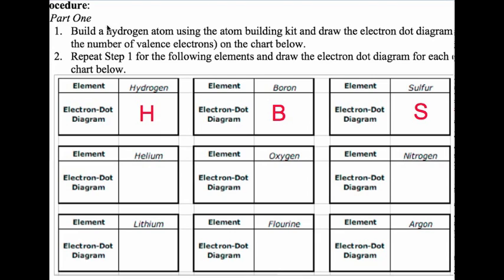Hydrogen is atomic number one, which means it has one proton. If it has one proton, it needs one electron to balance it out. That one electron goes in the first shell, and that one electron is hydrogen's only valence electron.